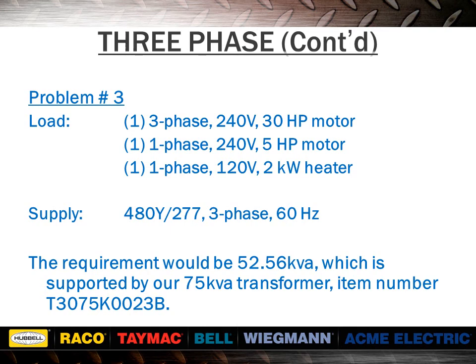For problem three, we review table four in section one of the catalog and find a 30 horsepower motor requiring 32.4 kVA of transformer. From table two, a 5 horsepower motor requires 6.72 kVA. Single-phase load needs to be added three times to give the equivalent three-phase rating. The sum of all different loads is 52.56 kVA, supported by our 75 kVA transformer, item number T3075K0023B, found on page 30 of section one. This transformer comes with a 120-volt tap able to provide 5% of the nameplate rating, or 3.75 kVA, which is sufficient to power a two kilowatt heater.